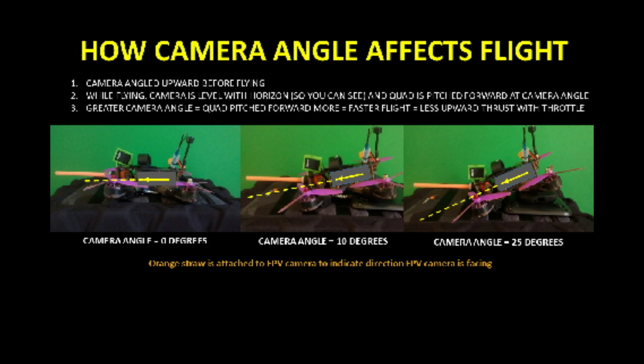The first sim run is with a camera angle of 25 degrees. Watch how slowly I'm flying and how difficult it is to maintain a specific altitude. The second run is with a camera angle of 35 degrees and the third run is with a camera angle of 45 degrees. Notice on these runs how my speed increases and my altitude control gets better with a higher camera angle. The camera angle of the quad I'll be flying on our backyard FPV track is approximately 30 degrees.